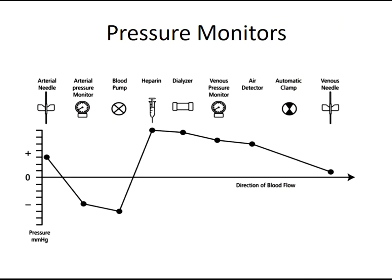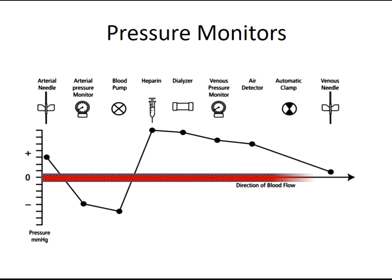The pressure monitors — arterial pressure monitor, transmembrane pressure monitor, and venous pressure monitor — are all continuously monitored while blood is moving through the circuit.